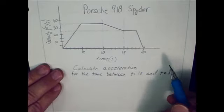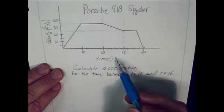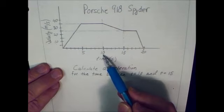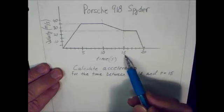So today what I'd like for you to do is to calculate the acceleration of the Porsche 918 Spyder in the interval between time equals 10 seconds and time equals 15 seconds.